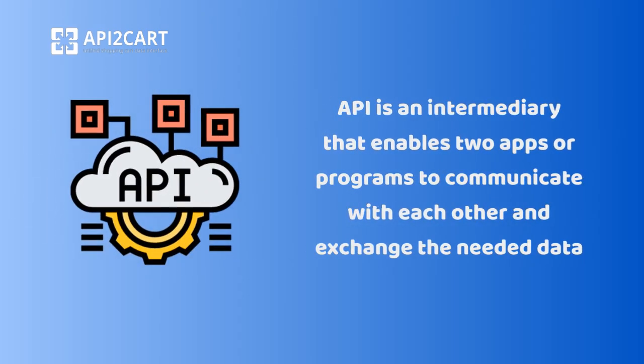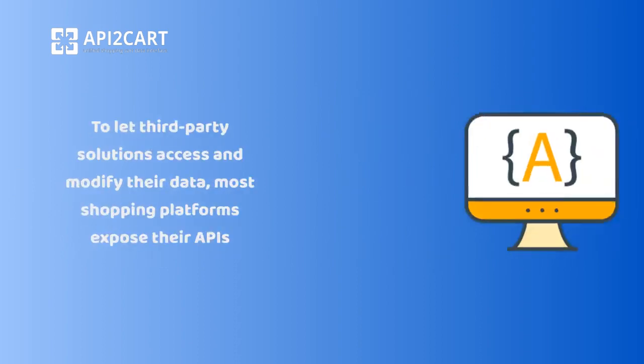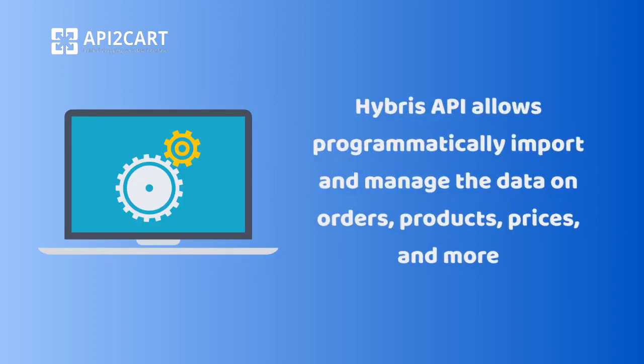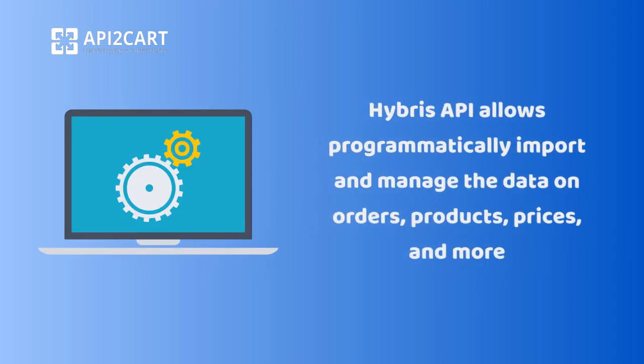An API is an intermediary that enables two apps or programs to communicate with each other and exchange the needed data. To let third-party solutions access and modify their data, most shopping platforms expose their APIs. Hybris API allows you to programmatically import and manage data on orders, products, prices, and more.